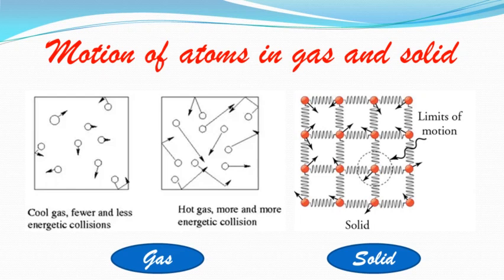Now let's see the motion of atoms in a solid. The velocities of atoms in a solid are shown by arrows in the picture. Atoms in a solid are tied to one another by forces acting between them, so they cannot be displaced from their fixed positions. However, because of heat, they oscillate — that is, they vibrate to a small extent. The higher the temperature of the solid, the faster their velocity of oscillation.